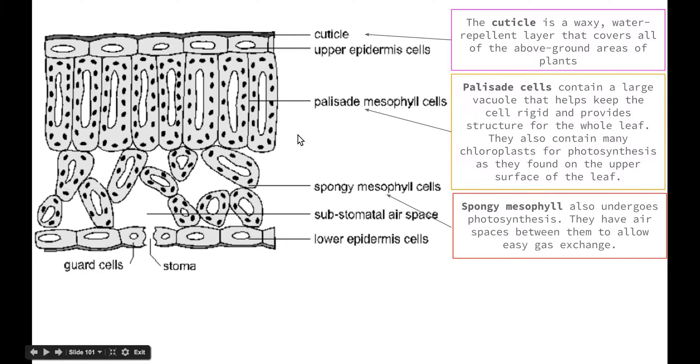Then our next group of cells are our spongy mesophyll cells which are found here beneath the palisade cells, which also undergo photosynthesis because we can see the number of chloroplasts within each. But they also have these air spaces in between them which allow easy gas exchange. So the carbon dioxide that's required for photosynthesis can easily move into the cells and the oxygen that's produced can easily move out.